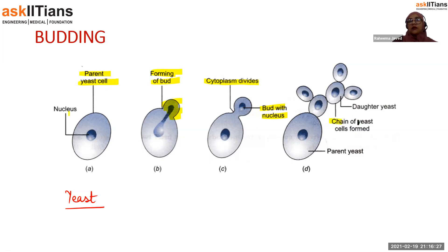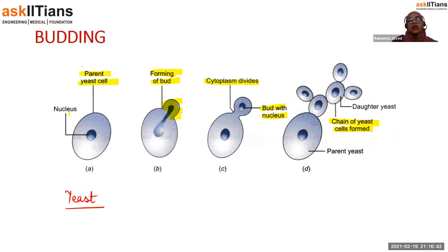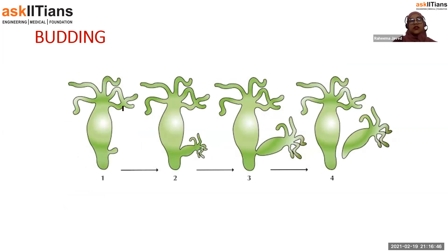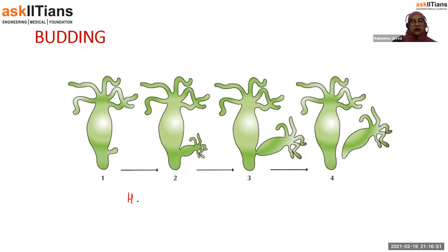More and more yeast cells are formed when there is a chain of buds that forms over the cell that first budded off. This is how the yeast cell grows. In the next picture, budding is shown in hydra.